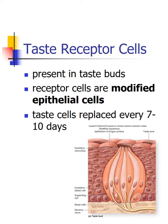Gustatory cells are modified epithelial cells replaced every 7 to 10 days due to a population of stem cells called basal cells. Beginning about age 50, we start to see declines in taste due to decreases in cell replacement and the number of taste buds. This is why older individuals often over-salt or over-spice foods — they are literally losing taste buds and sensation within their gustatory pathways.